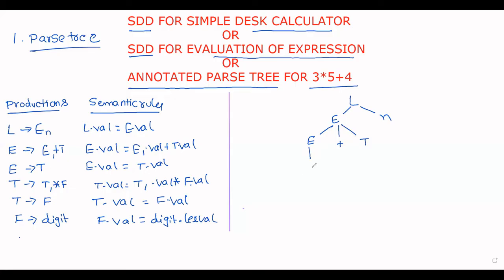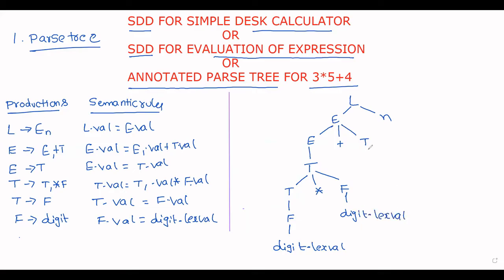Now expand E further — one more production gives T only. From T we have the production T tends to T star F. Finally T tends to F, and F tends to the particular digit. We write the attribute digit.lexvalue here — so F tends to digit.lexvalue and T tends to F, which tends to digit.lexvalue.